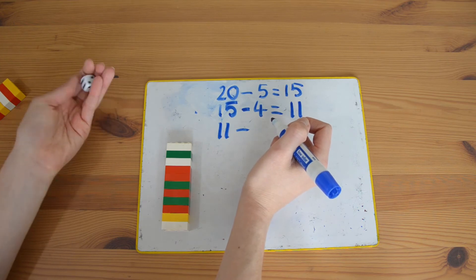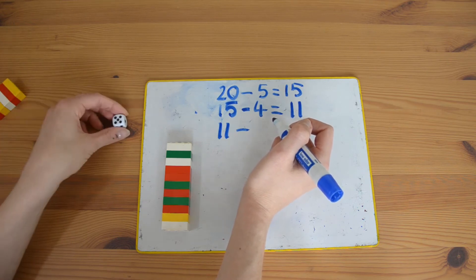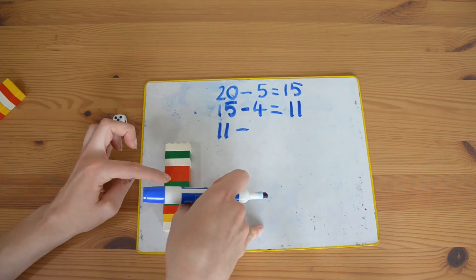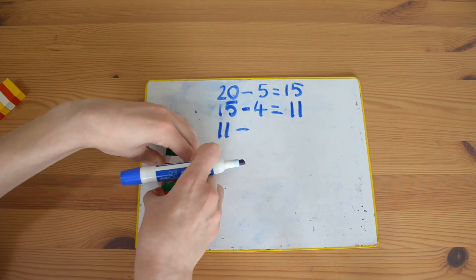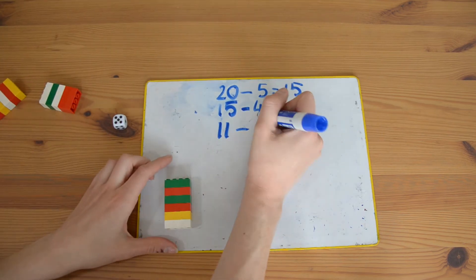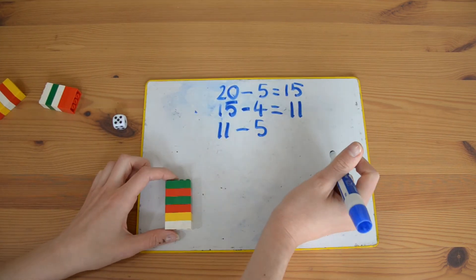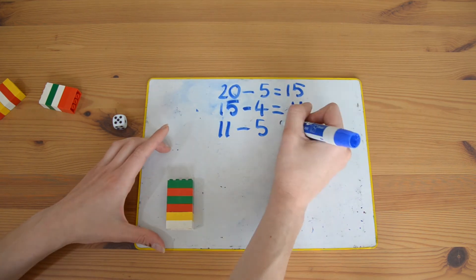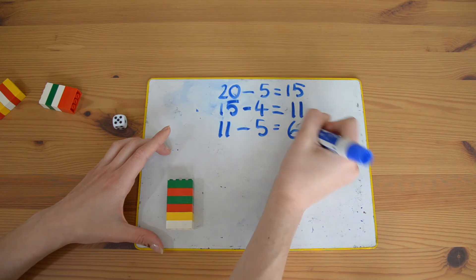So my whole number now is eleven because I've got eleven. My dice is going to tell me how many I need to take away. Five again, oh I am doing well. One, two, three, four, five. Eleven take away five.